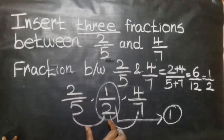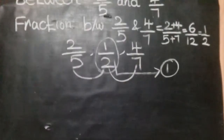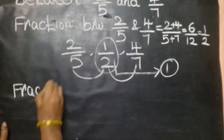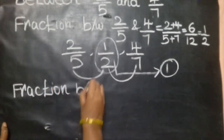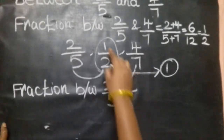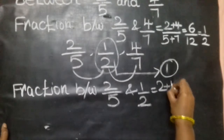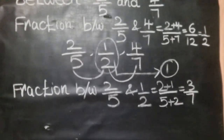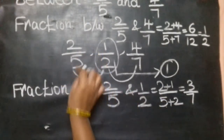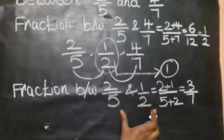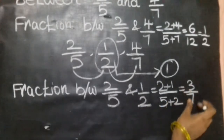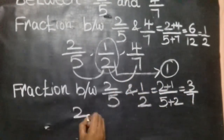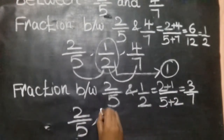Next, to find the second fraction, consider 2/5 and 1/2. Apply the formula: (2+1)/(5+2) = 3/7. So 3/7 lies between 2/5 and 1/2. The order so far is: 2/5, then 3/7, then 1/2.